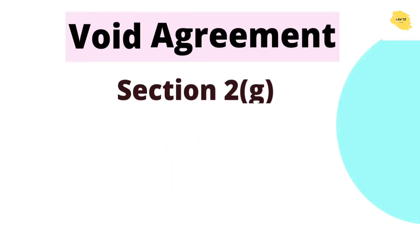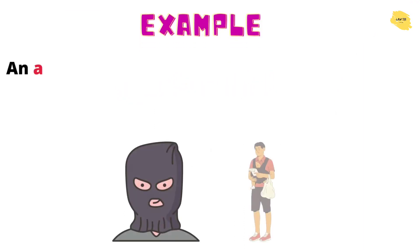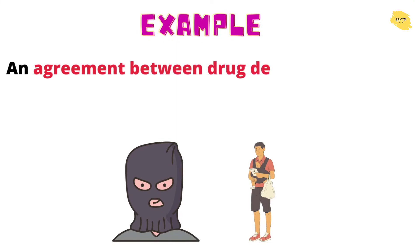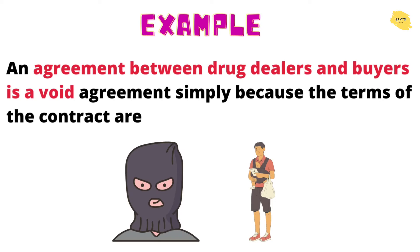Next is void agreement, Section 2(g). An agreement not enforceable by law is said to be void. For example, an agreement between a drug dealer and a buyer is a void agreement, simply because the terms of the contract are illegal. If a drug dealer goes to court saying a buyer took drugs but didn't pay, the court will not entertain it because this is an illegal contract — the agreement is void.